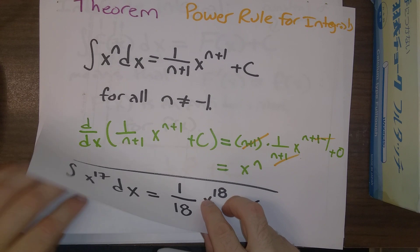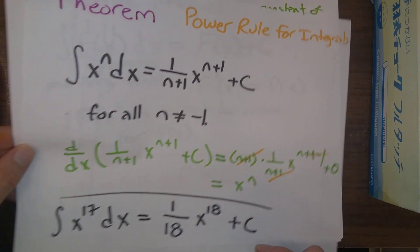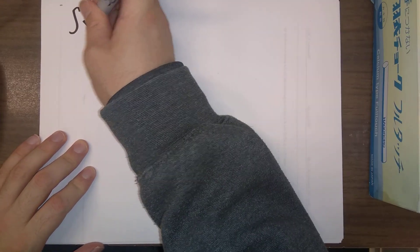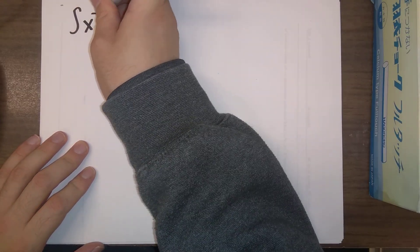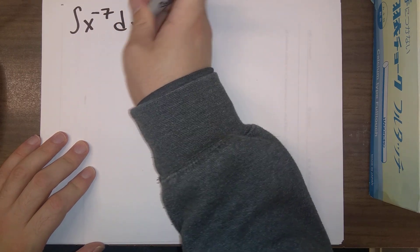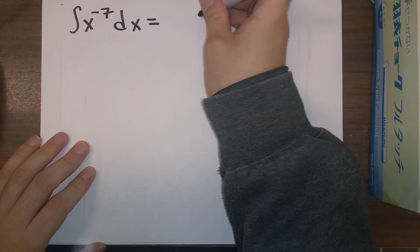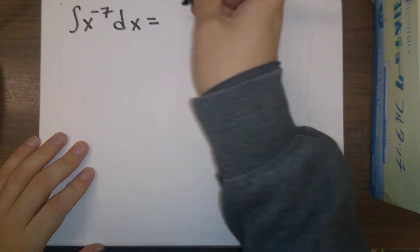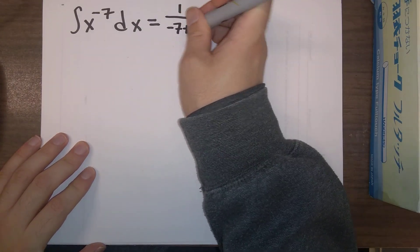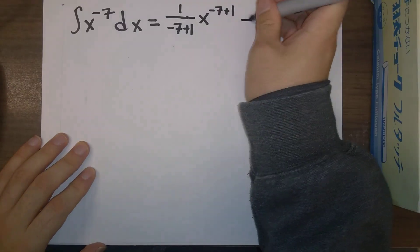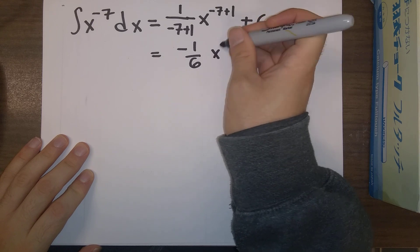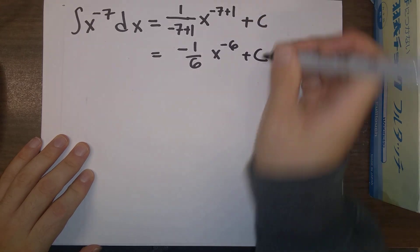I'll also point out here that this is an example of doing this for a positive integer power. We can also have this for negative integer powers. So the antiderivative of x to the minus 7 dx is, so we increase the exponent by 1, and we divide by that new exponent, plus c. So our answer here is minus 1 over 6 times x to the minus 6 plus c.